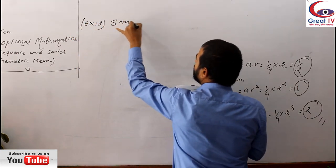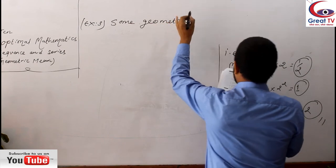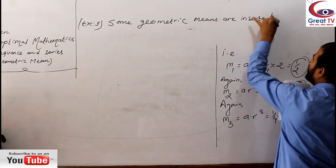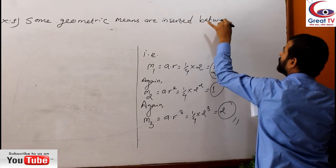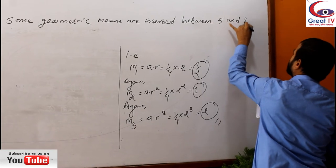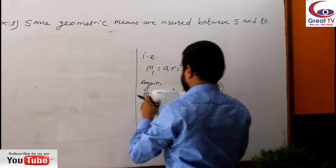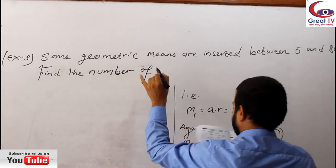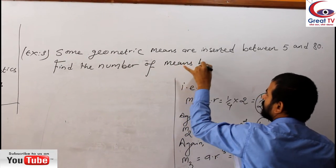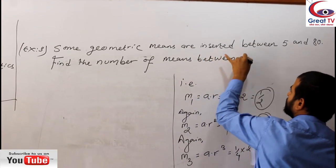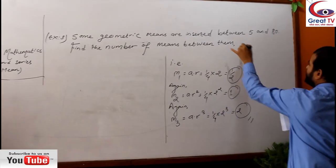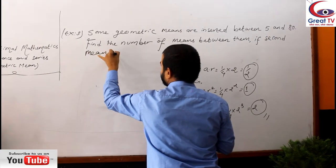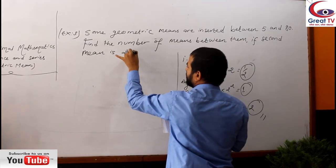And the question is, Example number 3: Some geometric means are inserted between 5 and 80. Find the number of means between them if second mean is 20.